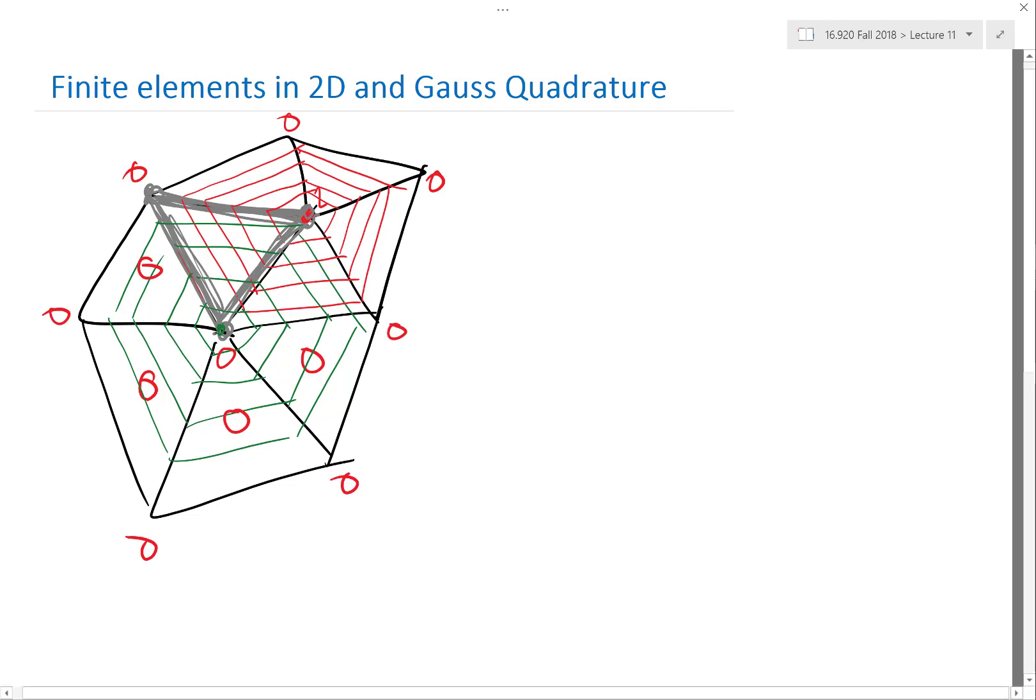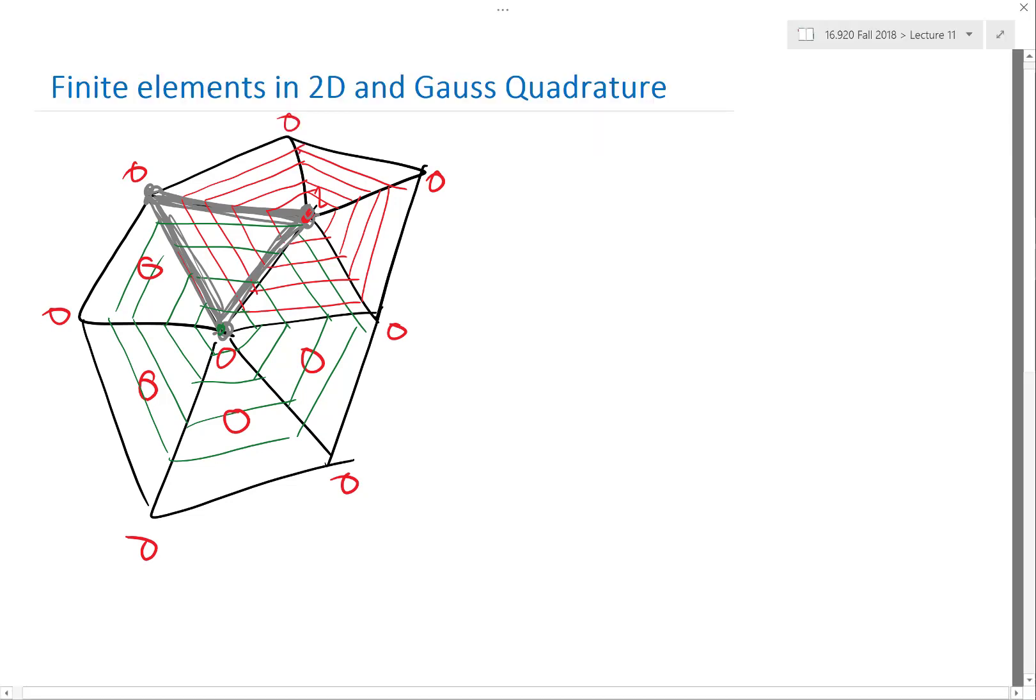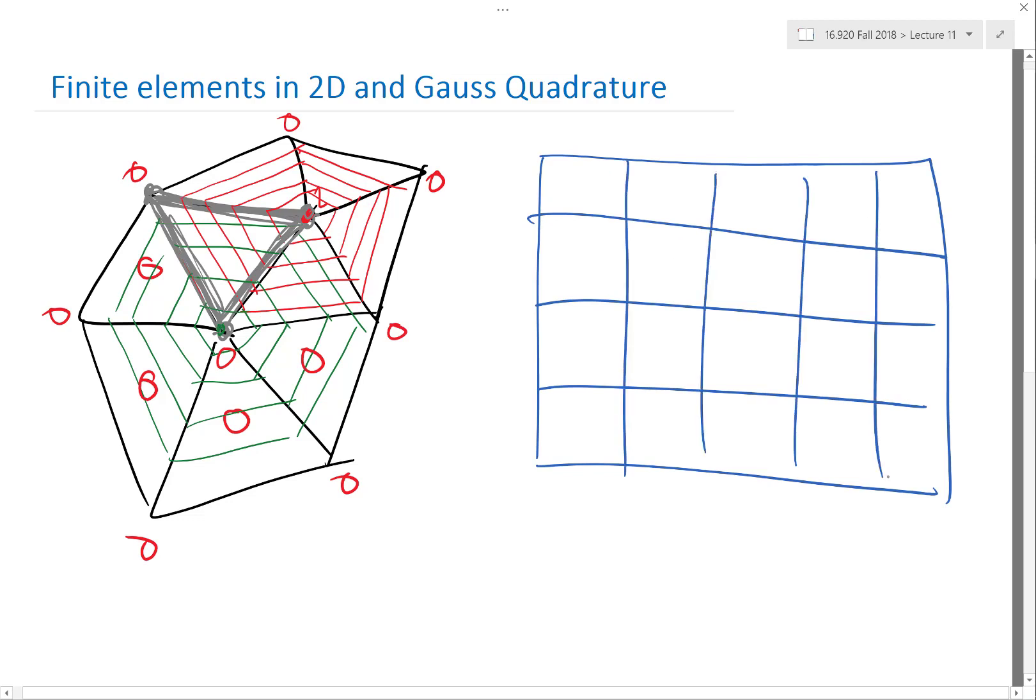And I have the big finite element matrix, alright. So that's one of the ways to do it. Another popular way to discretize a two-dimensional space is what we are going to encounter in our project.